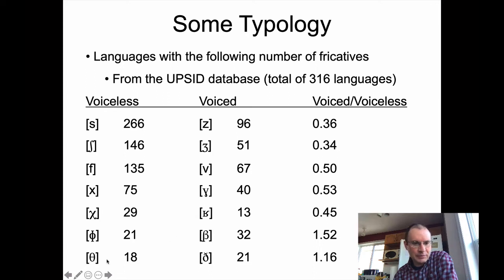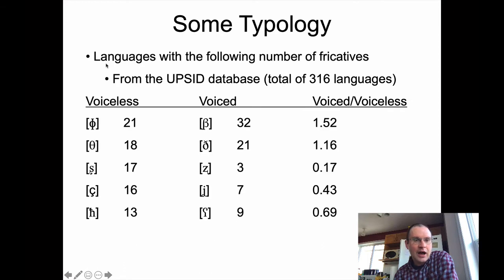This is a pair of fricatives we have in English, but they're not common across the world's languages — only 39 out of 316. There's probably some overlap too, because in English we have both. The most common fricatives are the sibilants like S and Esch, and then after that labial-dentals. There's also data on even less common fricatives — the retroflex, palatal, and pharyngeal fricatives — showing the same pattern of more voiceless than voiced, with all of these being increasingly less common.